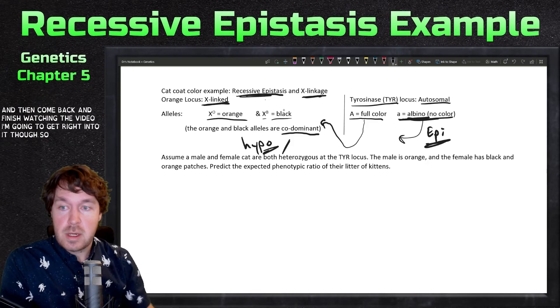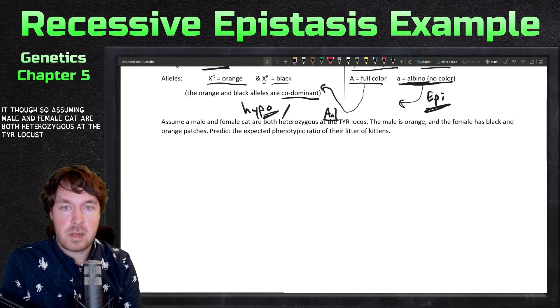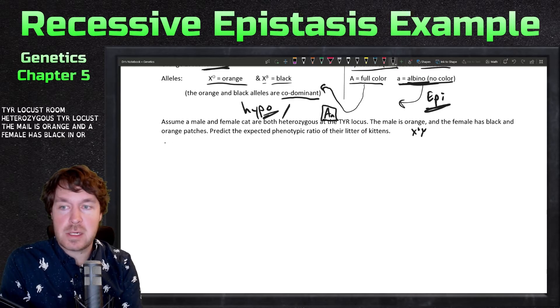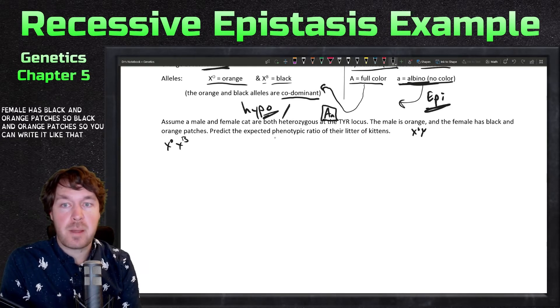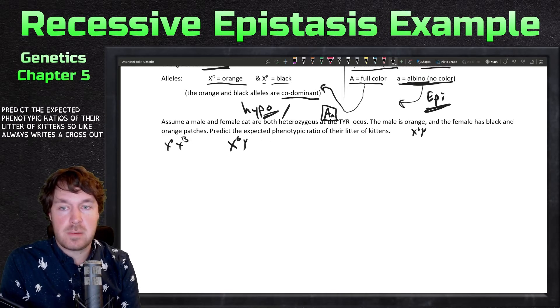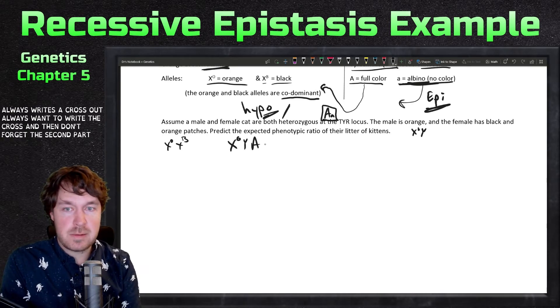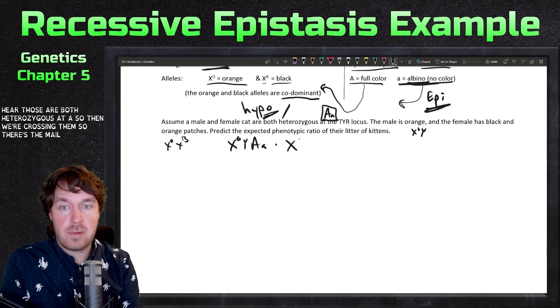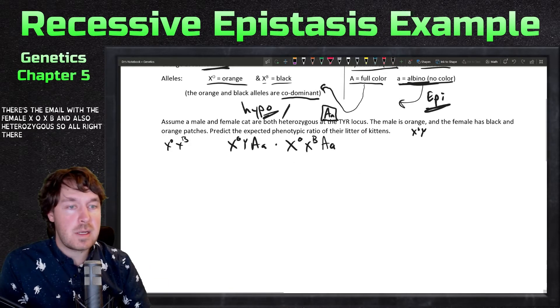There's the problem. I set it up for you, explained a little bit. Now feel free to work through it yourself and see where you struggle, then come back and finish watching. I'm going to get right into it. Assume a male and female cat are both heterozygous at the tyr locus - boom, heterozygous tyr locus. The male is orange and the female has black and orange patches. Predict the expected phenotypic ratios of their litter of kittens. Like always, write the cross out. Don't forget they're both heterozygous at A, so we're crossing the male with the female X^O X^B and also heterozygous.